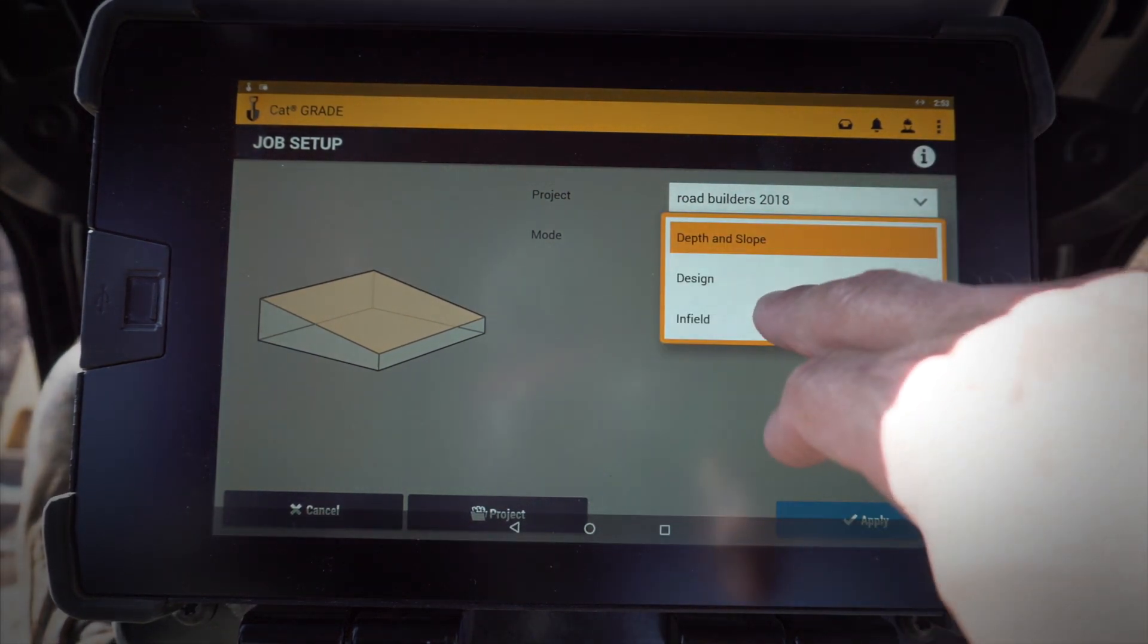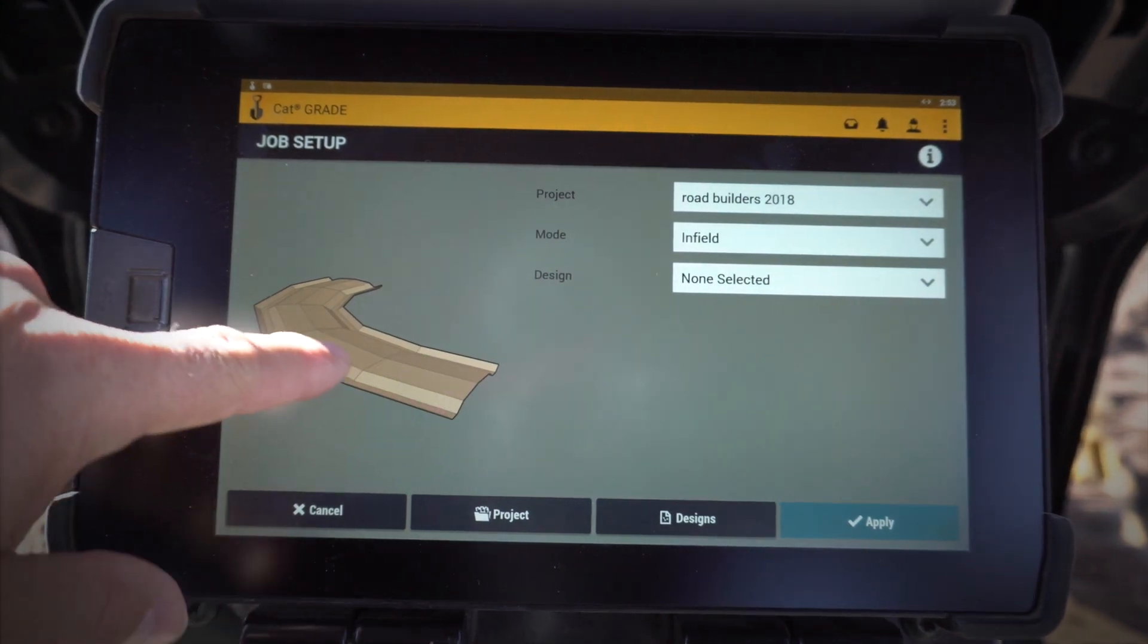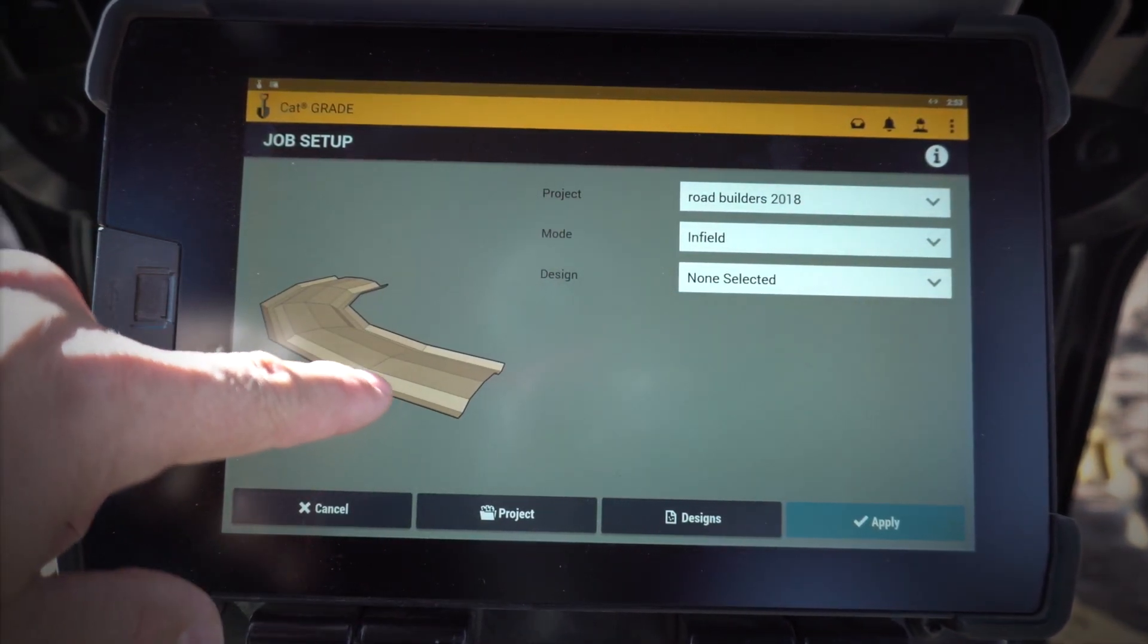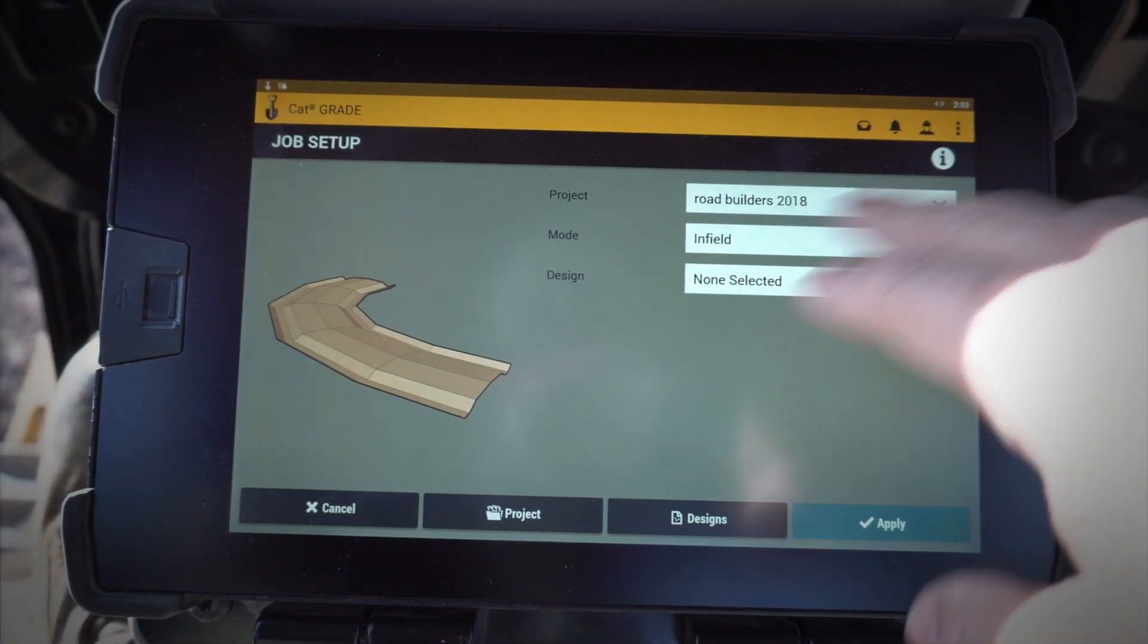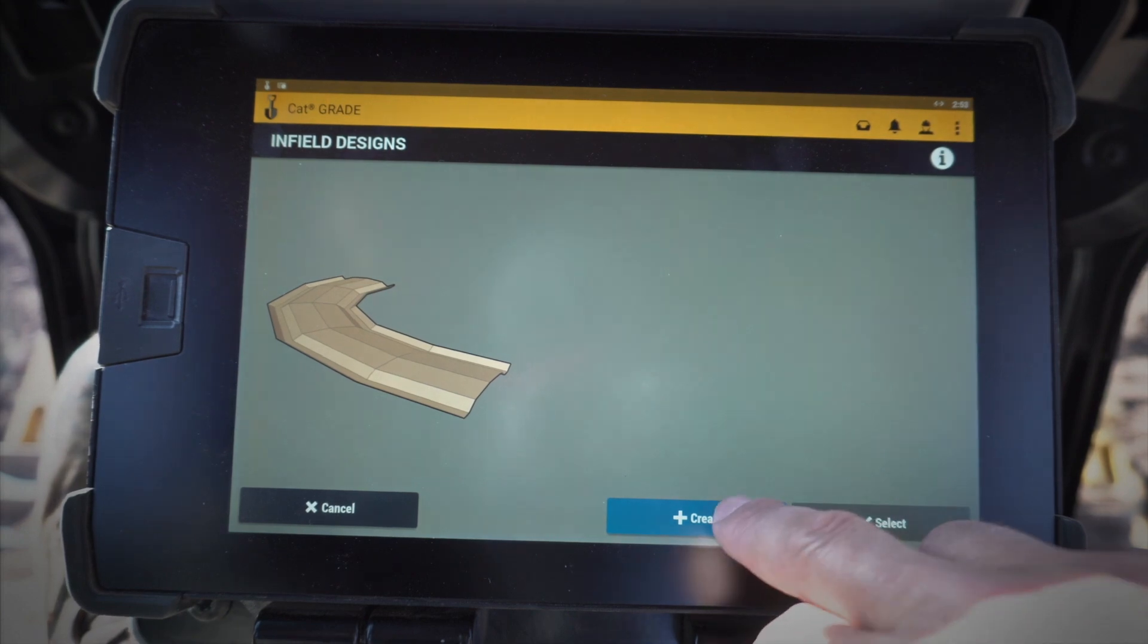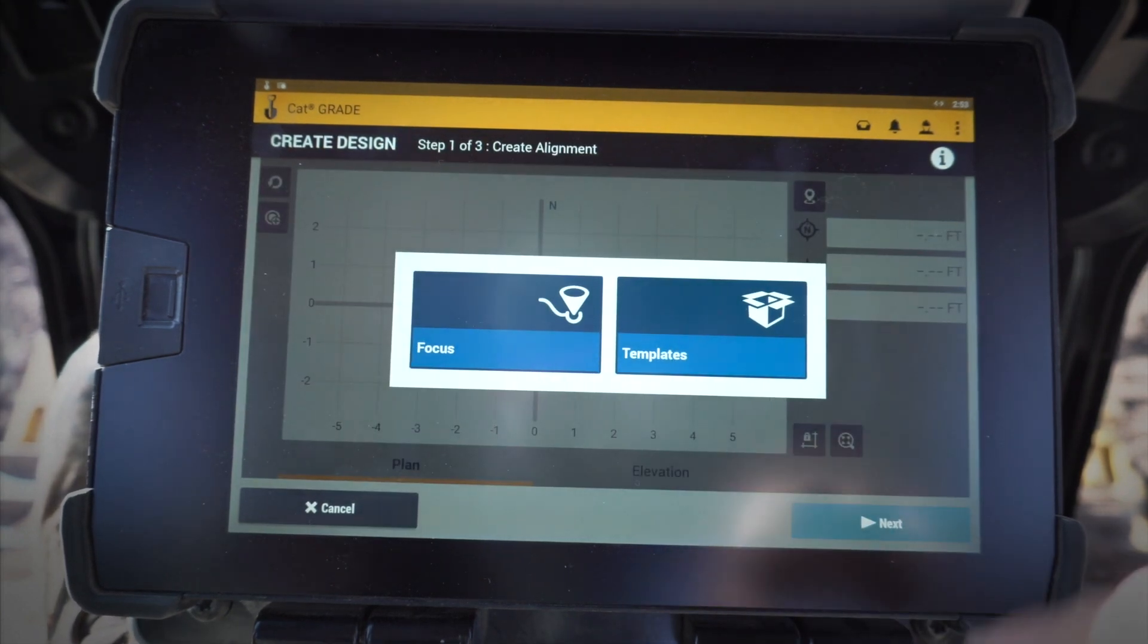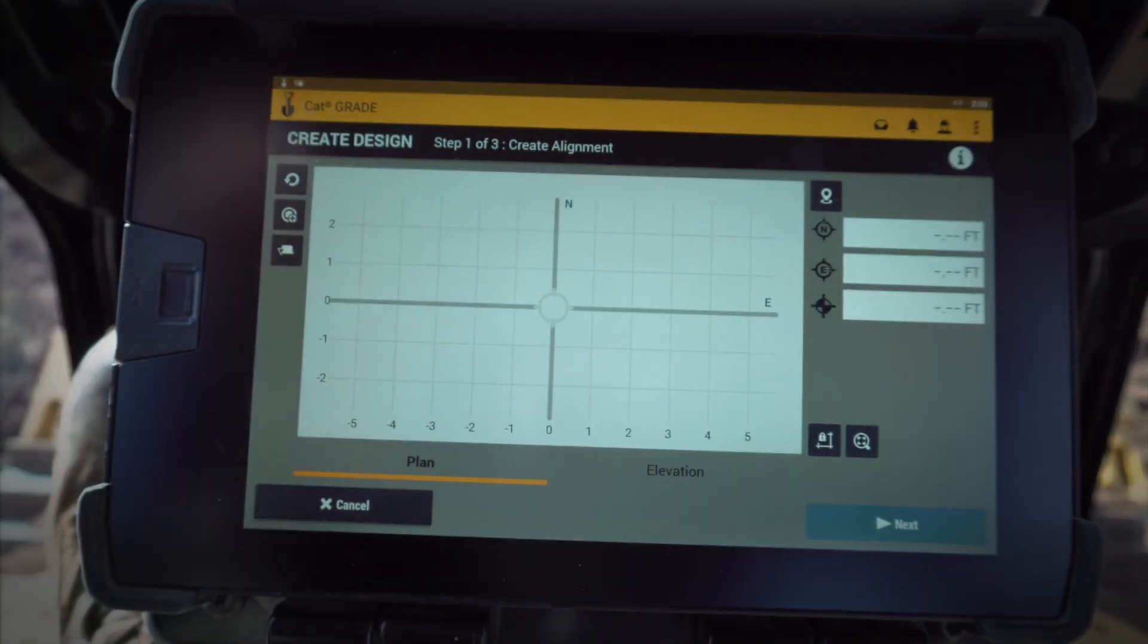We are going to use the infield design feature. Infield design allows you to create an alignment and then also several different slopes and a profile on that alignment. Let's go ahead and create a brand new infield design. I'm going to hit Designs, Create New. This is going to take me into a couple different ways I can do this. I like to use Focus because then I can use my blade focus points.